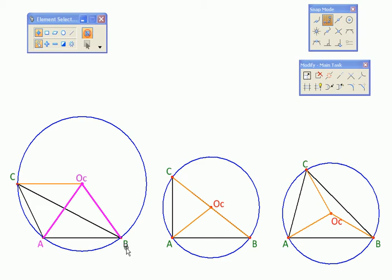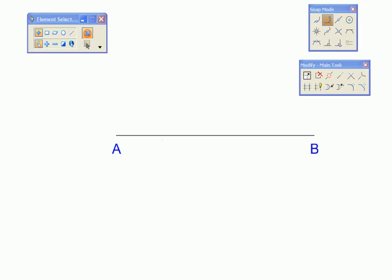Now whenever you hear that a point is equidistant from two other points, you should think of perpendicular bisectors, because that is one of the defining properties of perpendicular bisectors.